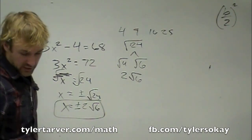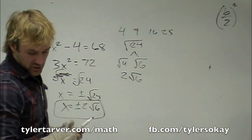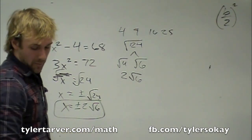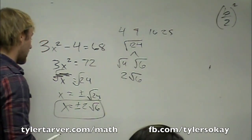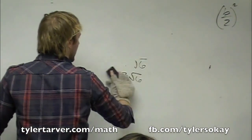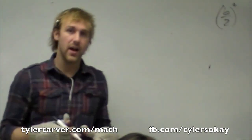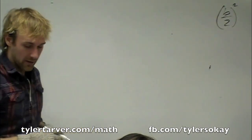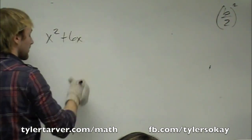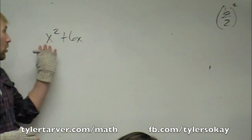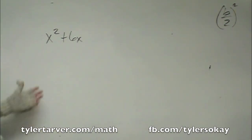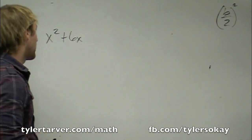Next thing we're going to talk about is completing the square. The term in the book says if a quadratic expression of the form x squared plus bx cannot model a square, you can add a term to form a perfect square trinomial — it's called completing the square. So essentially what you're doing is if you have a binomial, let's say you've got two parts of a quadratic equation, you can do completing the square, which means you add another term and solve that whole thing.